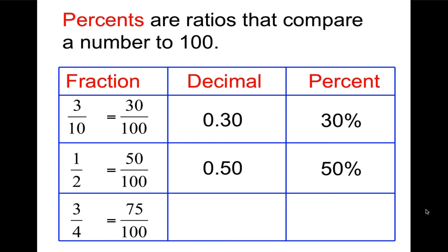Finally, 3 fourths equals 75 hundredths, which is 0.75 or 75%. These are ones that I consider mental math.